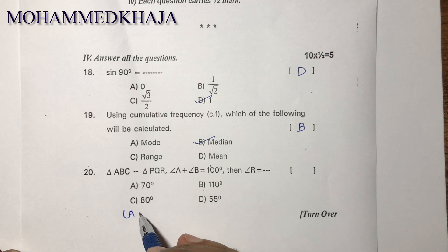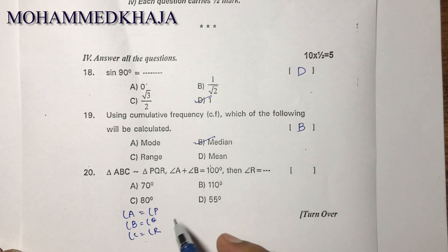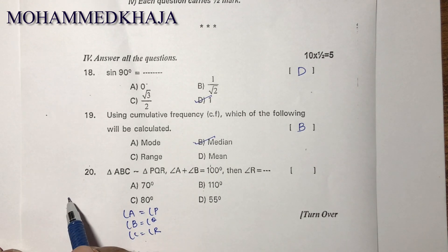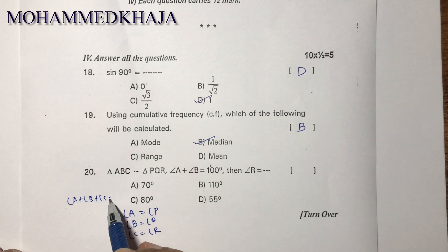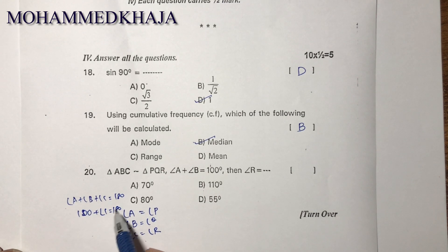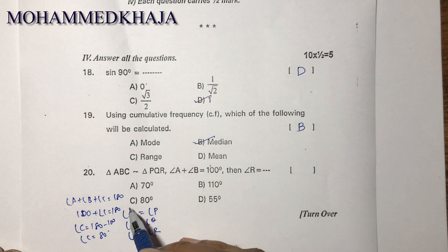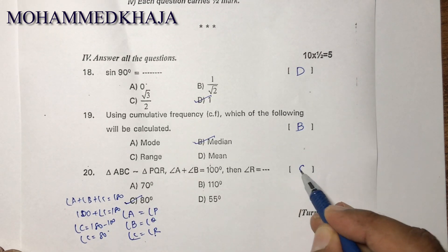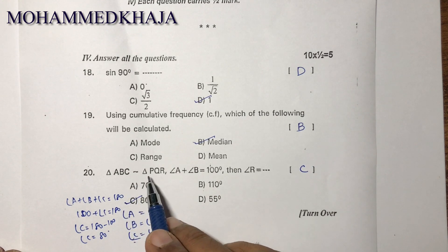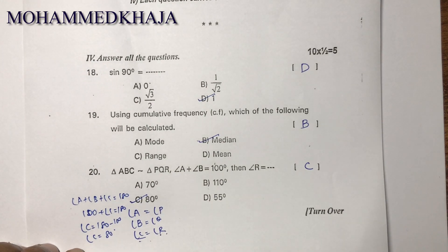Triangles ABC and PQR are both similar, so angle A equals angle P, angle B equals angle Q, and angle C equals angle R. If A plus B is 100, then since A plus B plus C equals 180, we get C equals 80 degrees. Since C equals R, angle R is 80 degrees. The correct option is C, because in similar triangles corresponding angles are equal and corresponding sides are proportional.